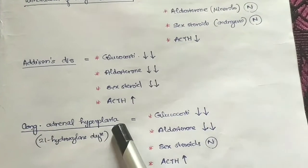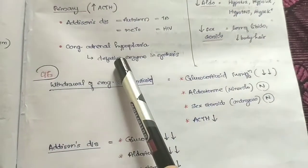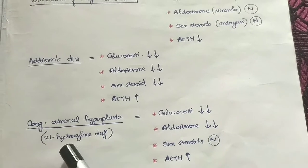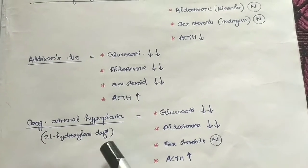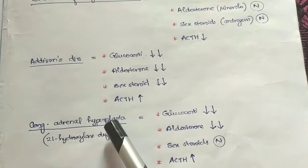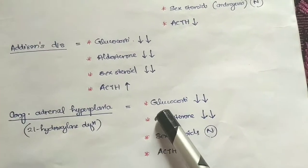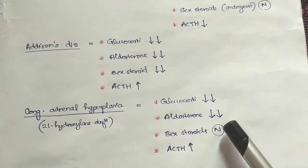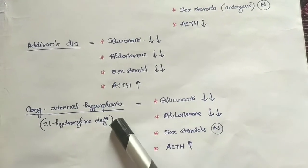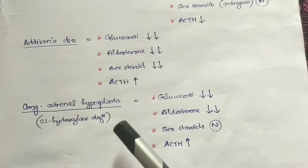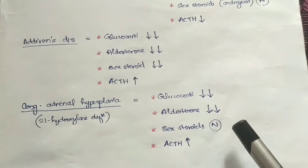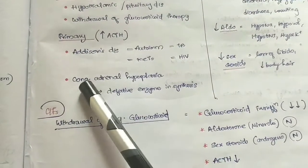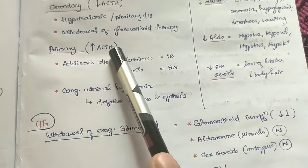In congenital adrenal hyperplasia, there is a defective enzyme synthesis. The deficient enzyme is 21-hydroxylase. Glucocorticoids are reduced, and aldosterone is also reduced. But sex steroids are independent — they may be increased or abnormal. So in congenital adrenal hyperplasia, sex steroids are elevated, but ACTH levels are again higher as the body tries to compensate. This is another primary cause where ACTH levels are elevated.